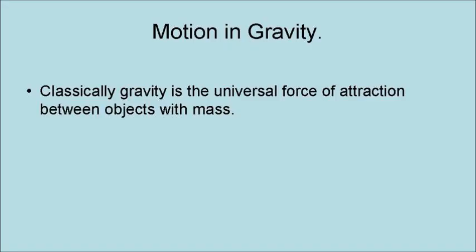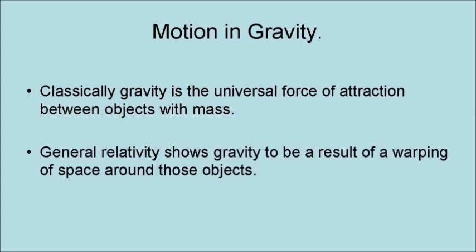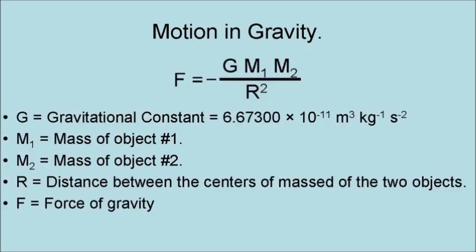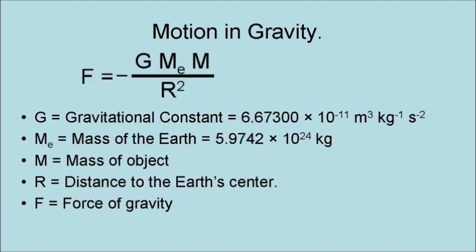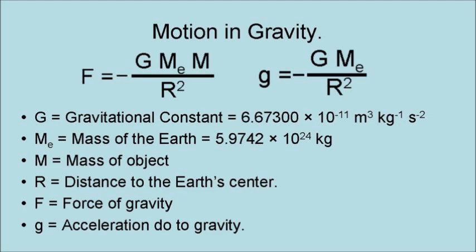Classically, gravity is the universal force of attraction between objects with mass. However, general relativity shows gravity to be a result of a warping of space around those objects. The force of gravity equals minus the gravitational constant times the mass of the first object times the mass of the second object divided by the distance between the center of masses of the two objects. The force of gravity acting on an object near the Earth is minus the gravitational constant times the mass of the Earth times the mass of the object divided by the distance to the center of the Earth squared. This means that the acceleration due to gravity of an object near the Earth equals minus the gravitational constant times the mass of the Earth divided by the distance to the center of the Earth squared.